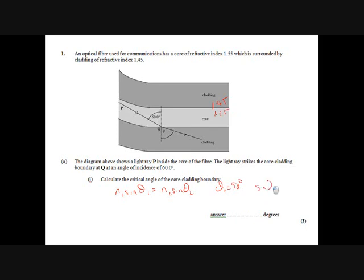Sine of theta 1, the critical angle, is n2 times 1 divided by n1. So n2, the material it's going into, is the cladding, so this is 1.45 over 1.55, which gives you sine minus 1 of that angle, which is 69.3 degrees.